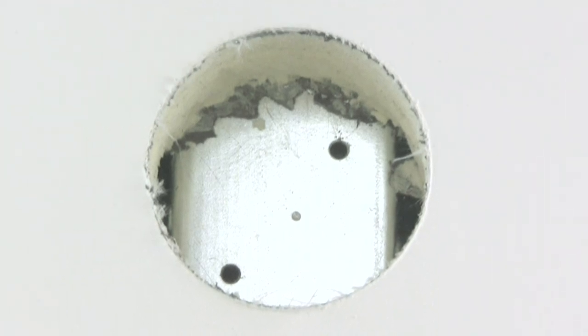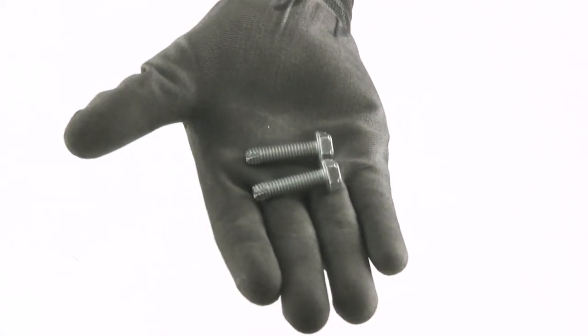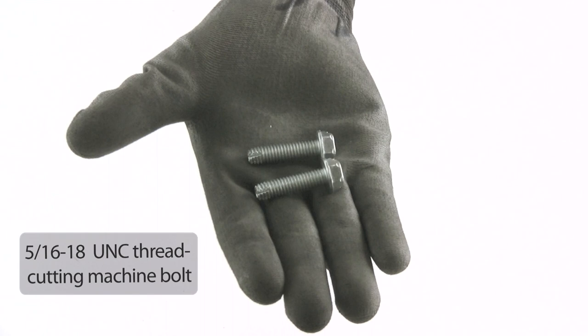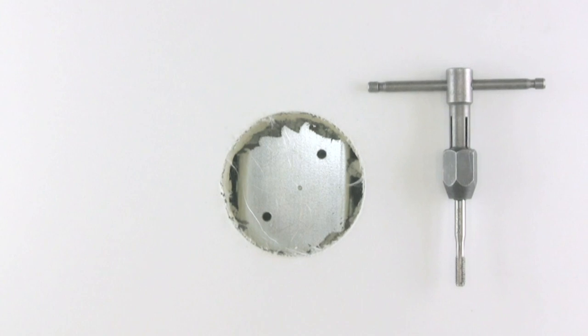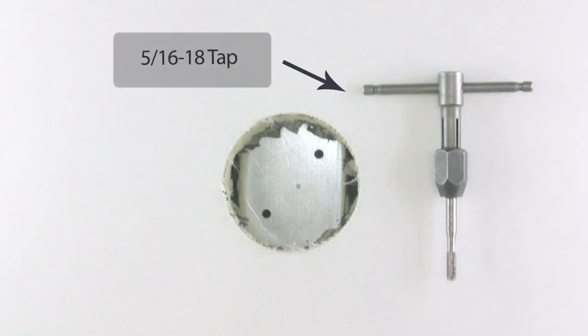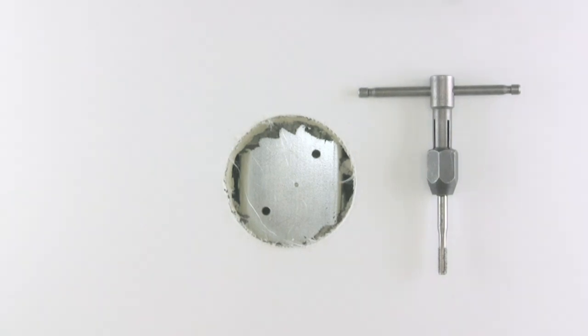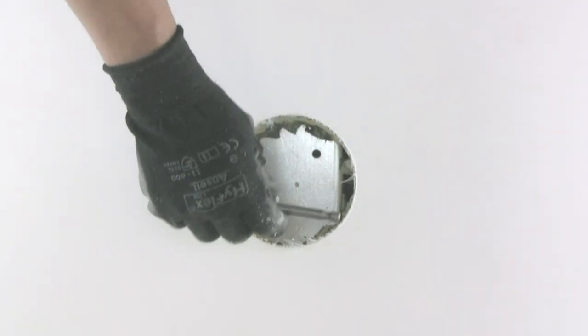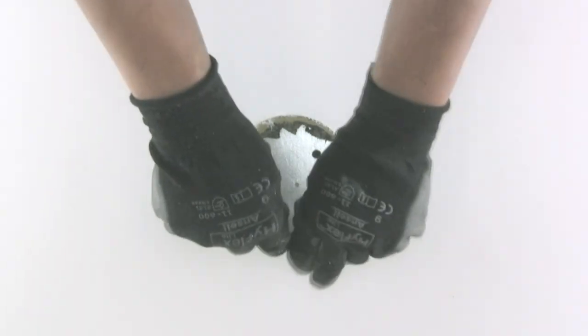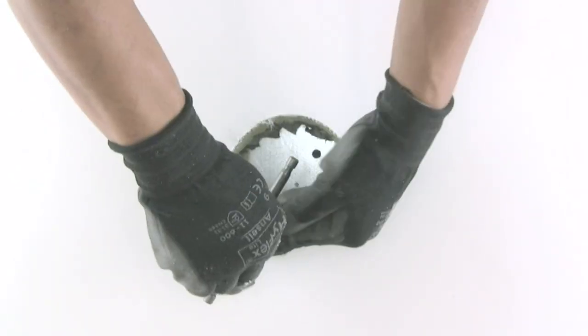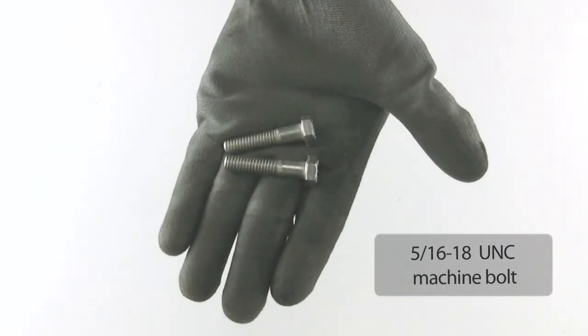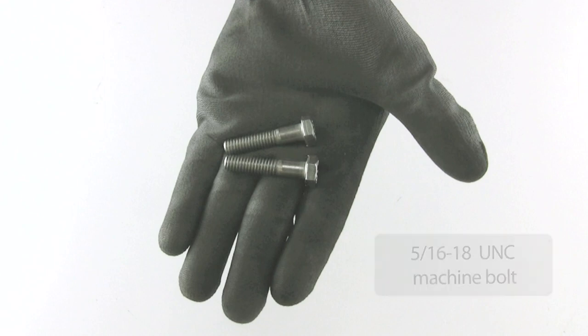After drilling your pilot holes, you have several options. You can bolt down your mount using a set of 5-16-18 UNC thread cutting machine bolts. Using thread cutting bolts saves you time because you will not have to tap the hole. If you don't have thread cutting bolts, you can tap the holes using a 5-16-18 tap. Once you have tapped the holes, you can fasten down the mount using a set of standard 5-16-18 UNC machine bolts.